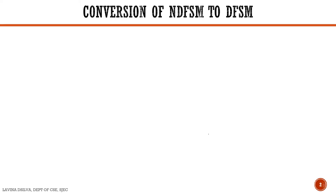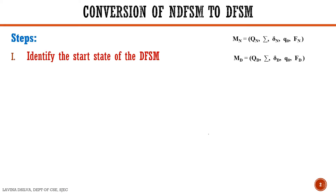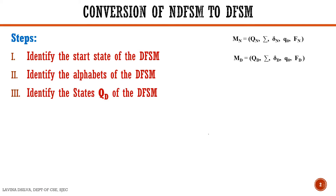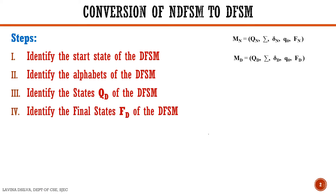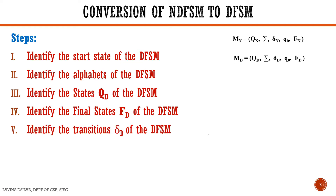The steps in the conversion of a NDFSM to a DFSM are as follows. First we identify the start state of the DFSM, followed by identifying the alphabets of the DFSM, then we identify the states QD of the DFSM, identify the final states FD of the DFSM, and then we identify the transitions delta D of the DFSM.